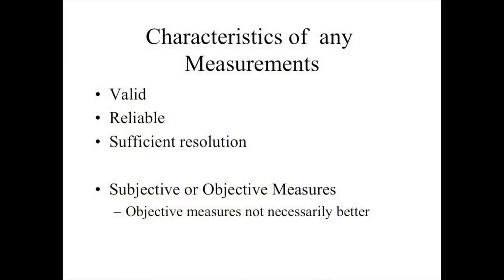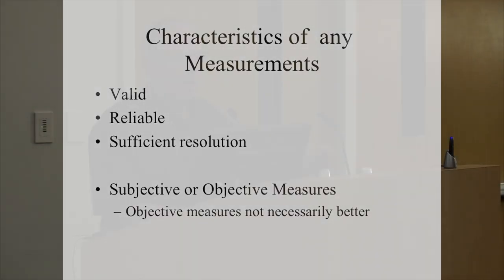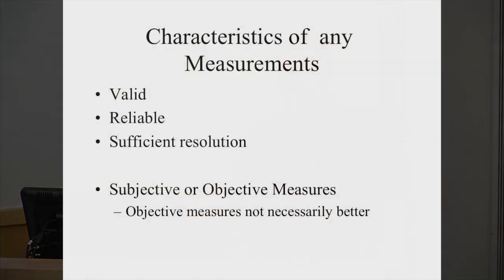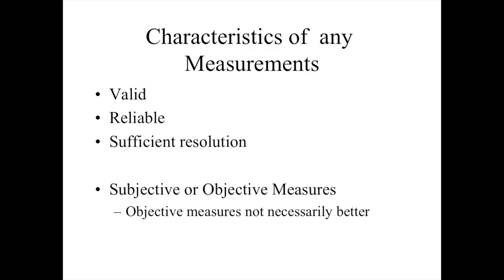For any measurement, no matter what it is, it needs to be valid, reliable, and have sufficient resolution so you can actually measure a change. People have proposed all kinds of different things, including objective measures, and some of those can be very helpful. But it's important that they actually be valid — that they are measuring the thing that we want to measure. Just because it's an objective measure doesn't inherently mean it's a better measure than a subjective measure. The critical issue is that all these measurements have to be valid, reliable, and have sufficient resolution to quantify what we're interested in measuring.